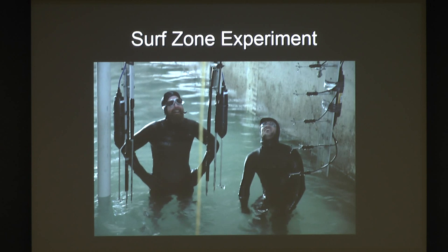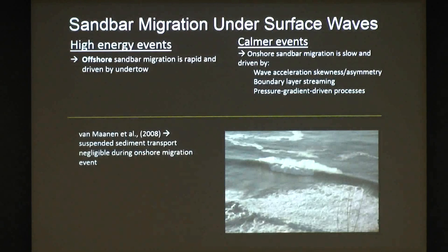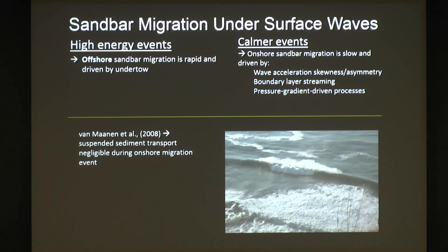The second thing I want to talk about is the SURFSTONE experiment that we concluded last winter, conducted in the Oregon State wave flume. That's obviously me and I'm typically smiling in the field - though I probably shouldn't be, because the water temperature is about 40-something degrees and we're in an unheated hangar so it's really cold. This study is focused on looking at how a sandbar might migrate in the surf zone. We know that under high energy events the sandbar typically moves offshore, mostly driven by undertow, and under calmer events the sandbar migrates onshore - a slower process thought to be driven by wave acceleration skewness or asymmetry.